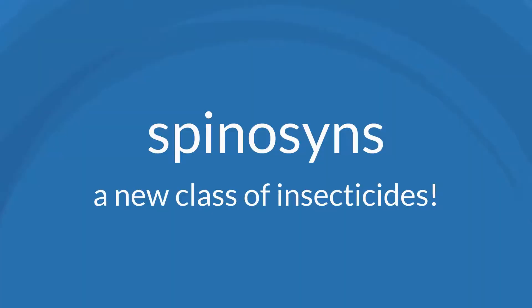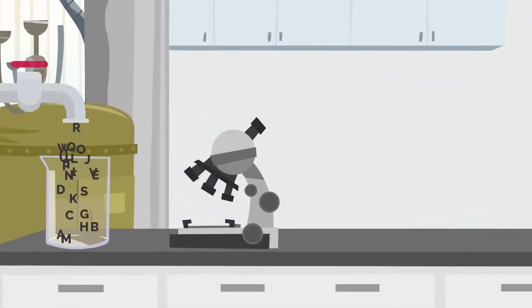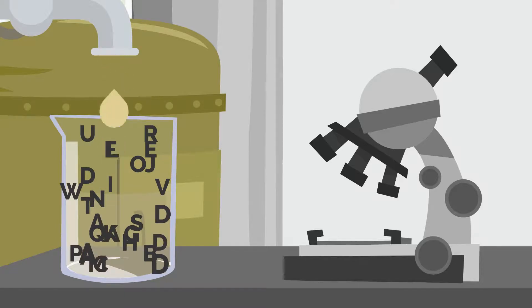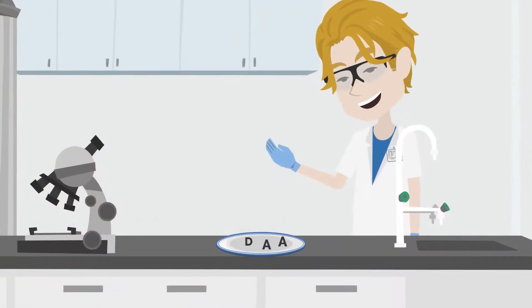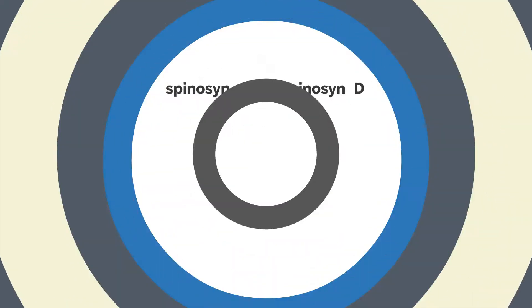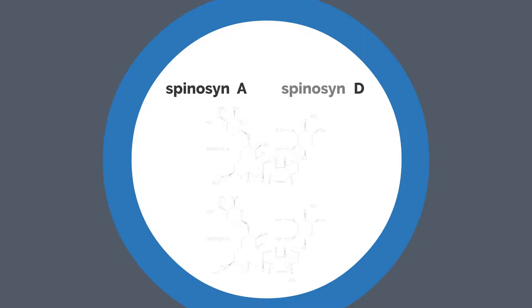The fermented bacterium produced 23 Spinosan compounds, named alphabetically from A to W. By 1991, scientists from the company now called Dow AgroSciences found the most abundant active compounds to be Spinosans A and D, creating Spinosad, a selective insect control product now called Qalcova Active.